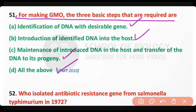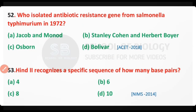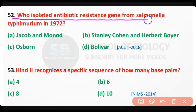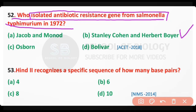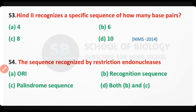Question number 52: Who isolated the antibiotic resistance genes from Salmonella typhimurium in 1972 — Jacob and Monod, Stanley Cohen and Herbert Boyer, Osborne, or Bolivar? The correct answer is option B — Stanley Cohen and Herbert Boyer isolated the antibiotic resistance gene from Salmonella typhimurium.